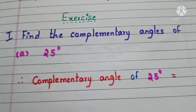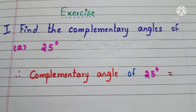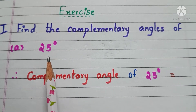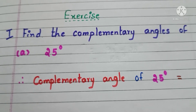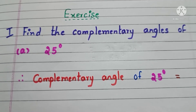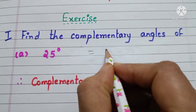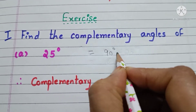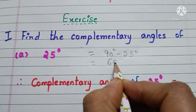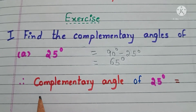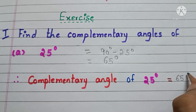Now, let us do a small exercise. First one is: find the complementary angles for the following. Angle ABT is 25 degrees. To find the complementary angle, just subtract the given angle from 90 degrees. So, 90 degrees minus 25 degrees, that is equals to 65 degrees. Therefore, the complementary angle of 25 degrees is 65 degrees.